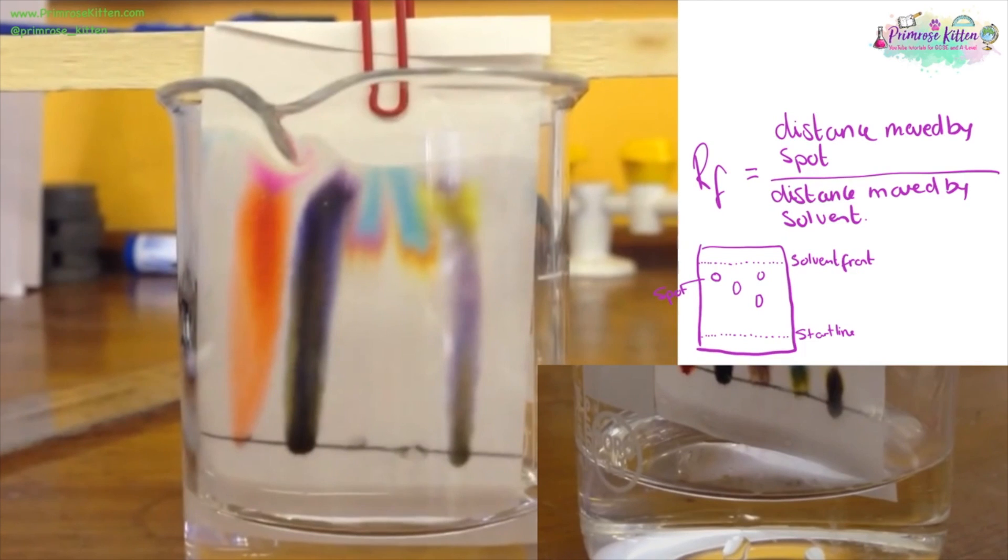We can use chromatography to separate out compounds and you're going to get these beautiful separations. We need to make sure that the end of the paper is just in the water, and that you've drawn your start line in pencil. If you draw it in pen, then your start line is going to run as well and that is going to cause you problems. We're going to put a lid on here to stop the solvent evaporating. When we want to work out RF value, we do the distance moved by the spot divided by the distance moved by the solvent.